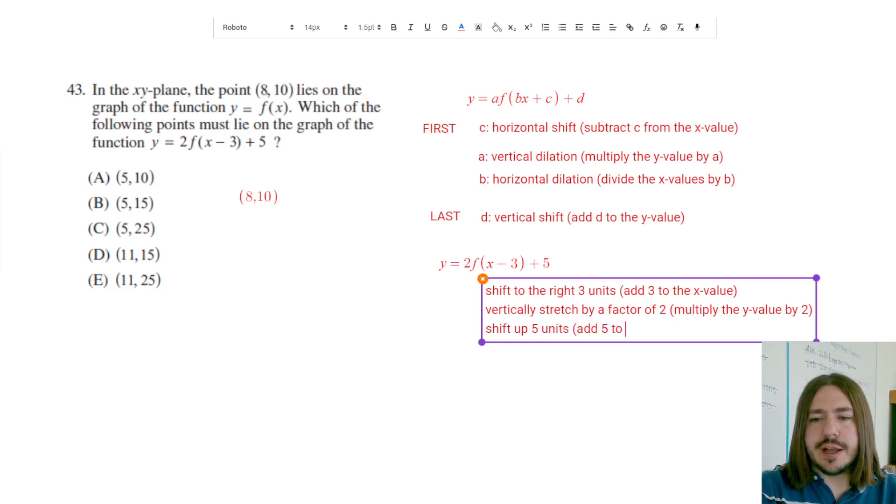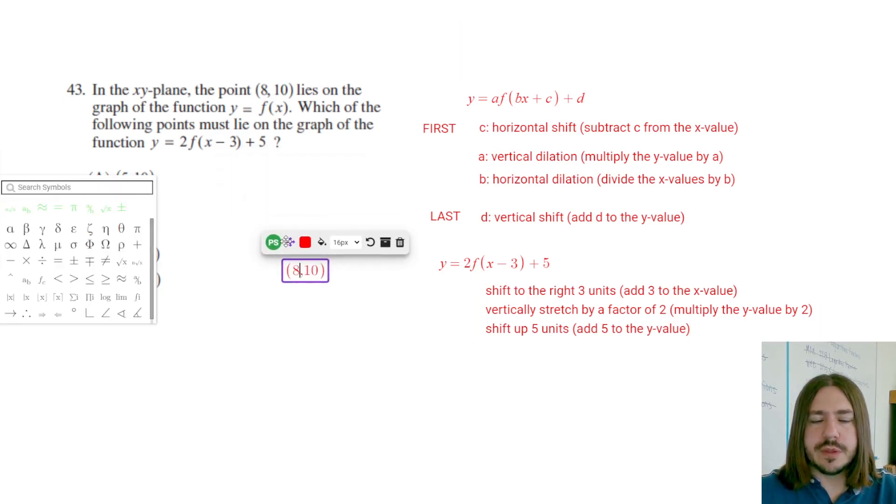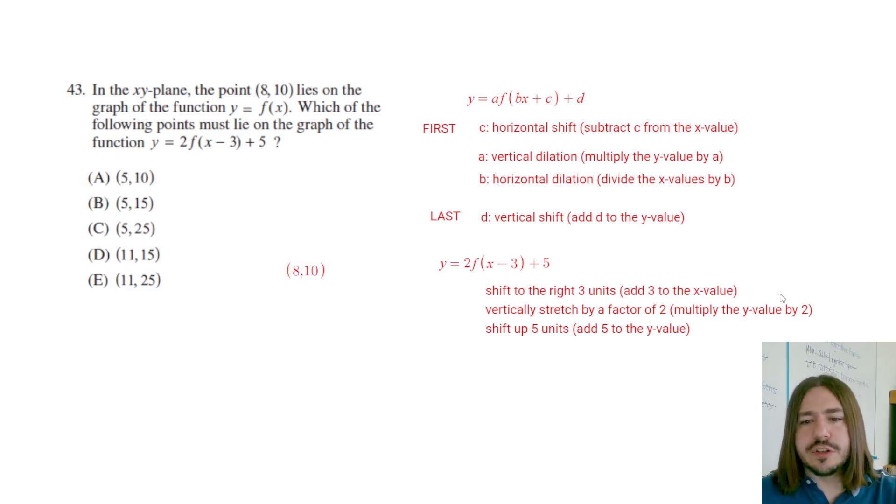And then finally, we're going to do the vertical shift here. So we're going to shift up 5 units. So we're going to add 5 to the y value. I just wanted to really explicitly lay out what steps we're going to take here, why we're taking those steps, so that you kind of understand how to work a similar problem. So we're going to add 3 to the x value. So 8 plus 3 is going to be 11. Then we want to multiply the y value by 2. So we're going to multiply 10 by 2. 10 times 2 is going to be 20. And then we want to shift up 5 units. We're going to add 5 to the y value. So we end up at (11, 25).